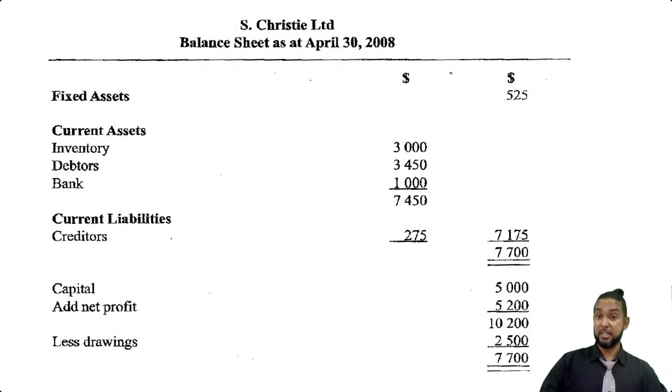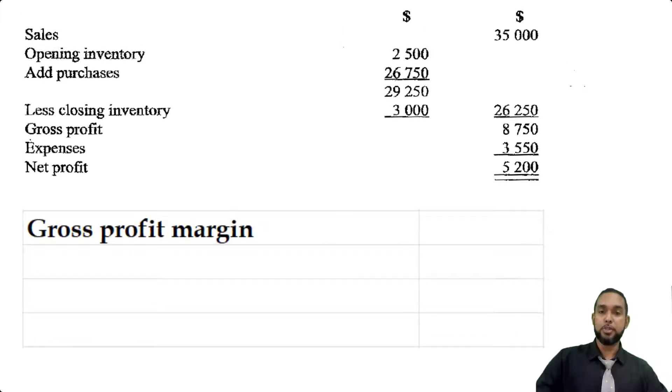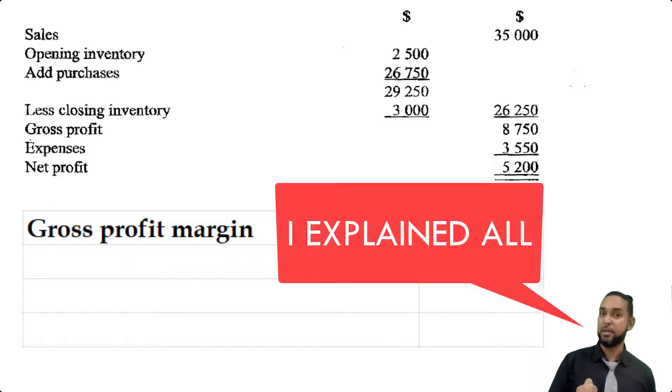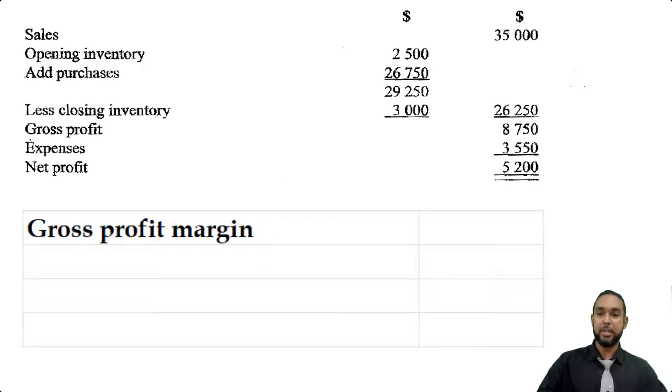Now what they want us to do is calculate quite a few ratios. The first one up is the gross profit margin, and that's simply the gross profit divided by sales expressed as a percentage. Before I show it, I'm going to put a card up there to my ratios playlist. If you need to refresh yourselves or learn what ratios are for CSEC POA, please check out that playlist and then come back here.